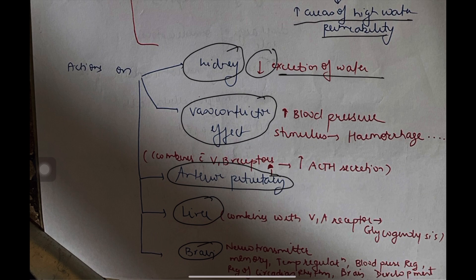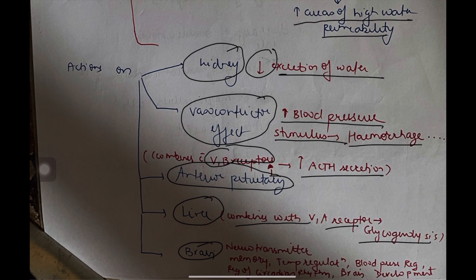On the kidney, it decreases the excretion of water. In VC effect, it increases blood pressure. The stimulus for this is hemorrhage. In anterior pituitary, it combines with V1B receptors and increases ACTH secretion. In liver, it combines with V1A receptor and increases glycogenolysis. In brain, it acts as a neurotransmitter, helps in memory, temperature regulation, blood pressure regulation, regulation of the circadian rhythm, and brain development.